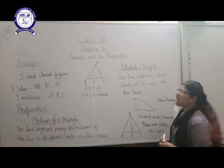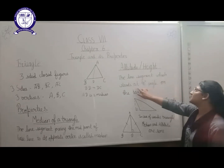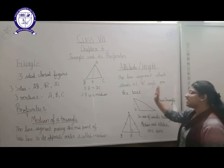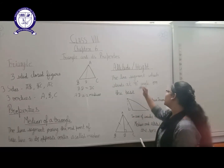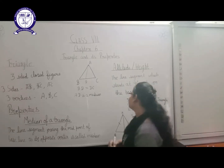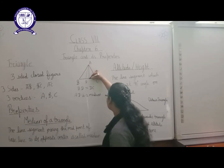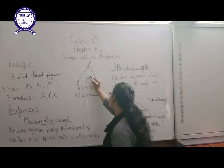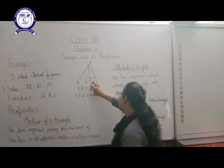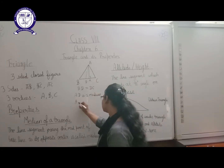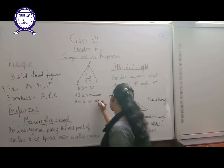Now we will talk about altitude, or height. The line segment which stands perpendicularly at a 90-degree angle on the baseline is called altitude. Suppose we make this perpendicular on the baseline BC and name it AM. AM is the altitude here because it stands at 90 degrees on the baseline.